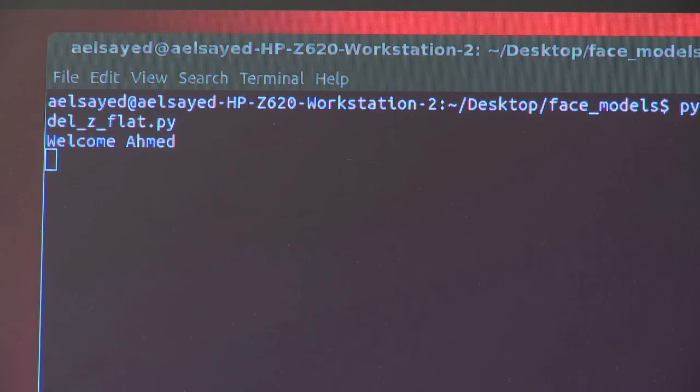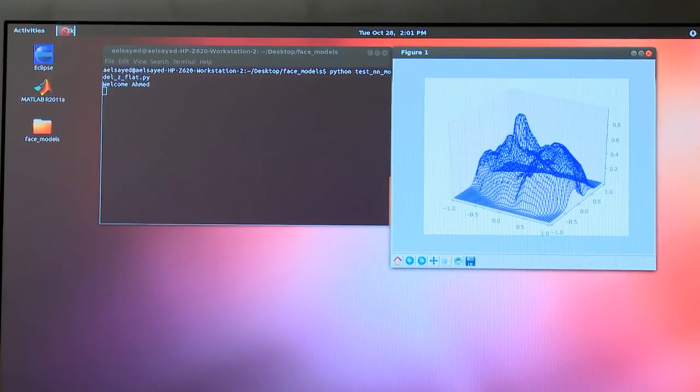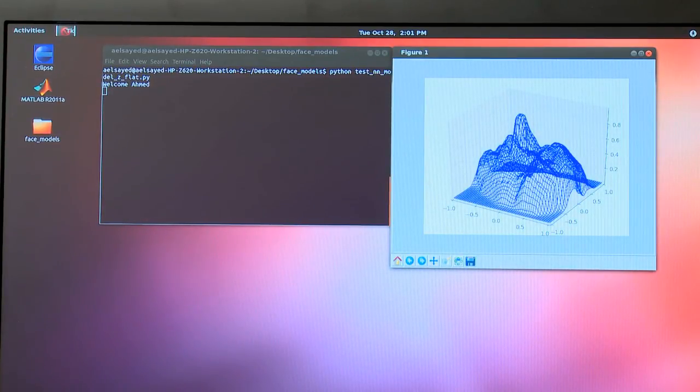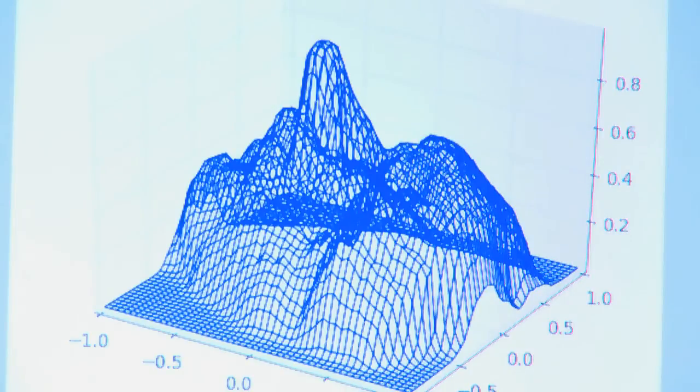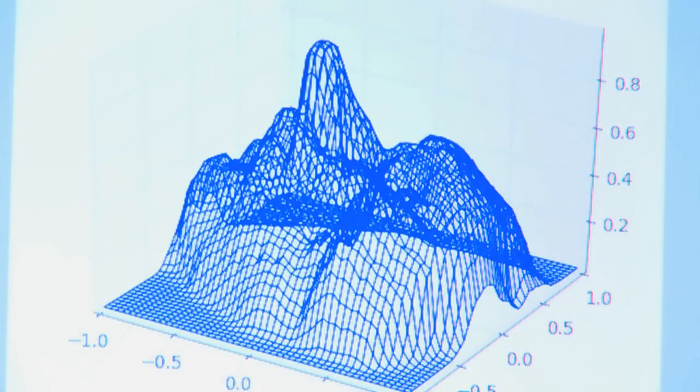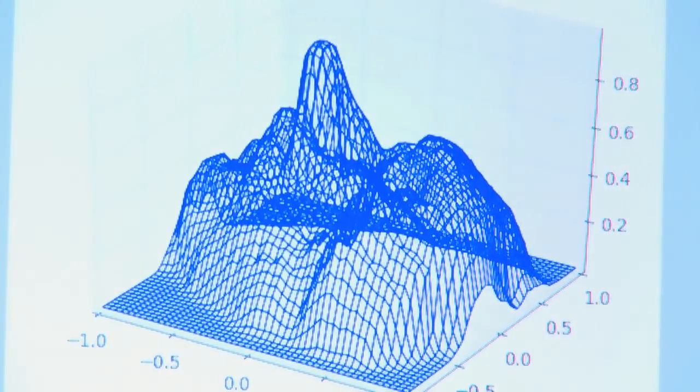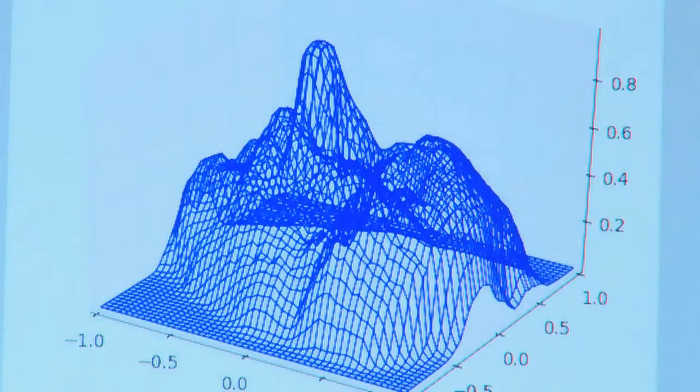As we can see, the result of the recognition system is 'welcome Ahmed' because my image and my 3D data has been captured by the camera and sent to the server. That's why it captured my identity from the stored database system and displays the 3D mesh for my face.